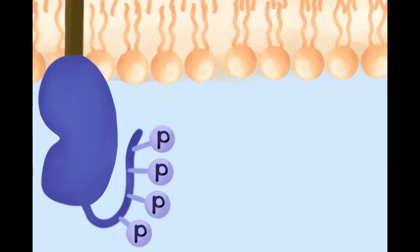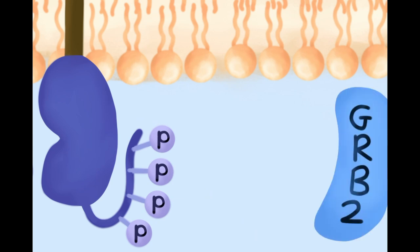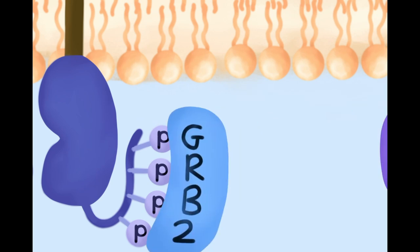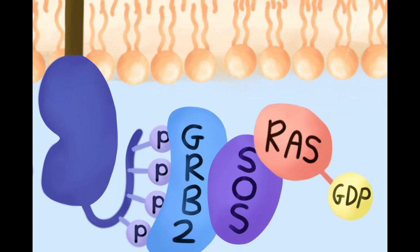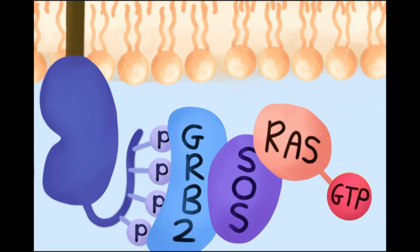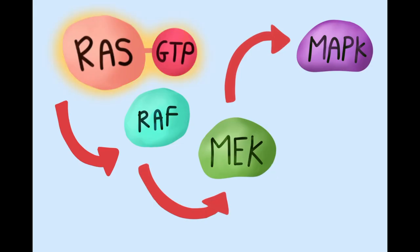The protein GRB2 binds to these phosphorylated tails. Then the protein SOS binds to GRB2. Afterwards, a GDP-bound RAS protein binds to SOS, allowing SOS to exchange the GDP for GTP. This activates RAS. The activated RAS activates RAS kinase, which continues the MAP kinase pathway.